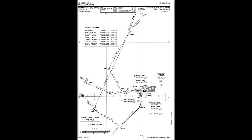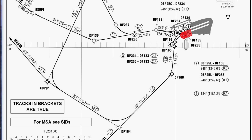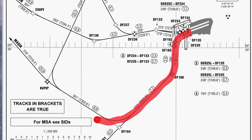Before we get into the procedures at Toronto, I'm showing you a chart from Frankfurt. At Frankfurt, the RNAV departure has waypoints that start right at the end of the runway. You just put your FMC onto LNAV and VNAV and it follows along the path — there are no issues, it's very straightforward.